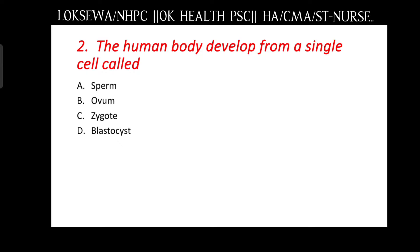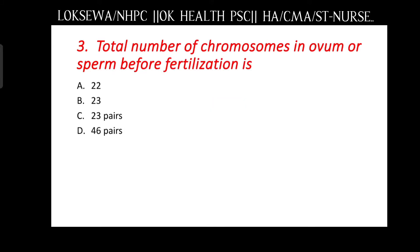The answer is C, zygote. Next question: the total number of chromosomes in ovum or sperm before fertilization is — 22, 23, 23 pairs, or 46 pairs?